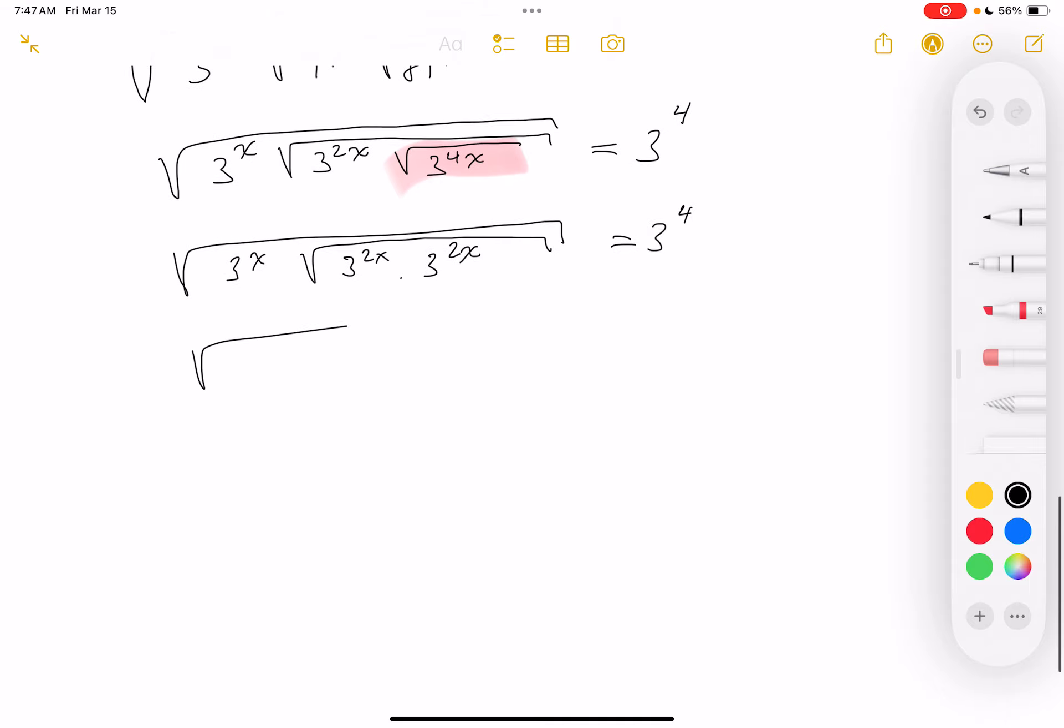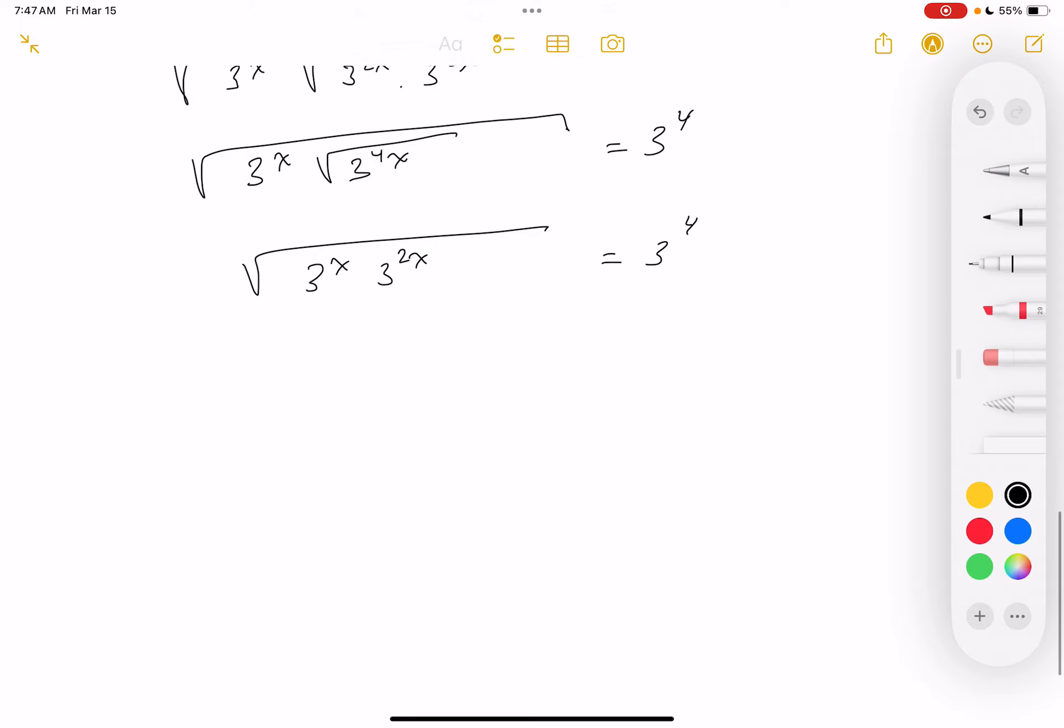Let me keep rewriting. This is 3 to the x, and inside that radical is going to be 3—add the x together, you get 4x. What I'm going to do now: 3 to the x, the square root of 3 to the 4x is 3 to the 2x. That's 3 to the 4 though.